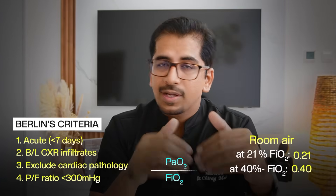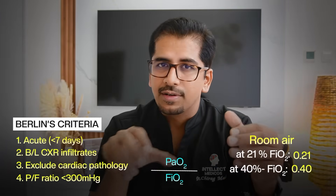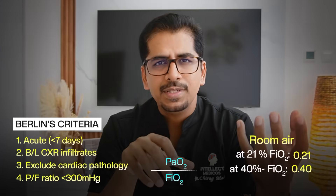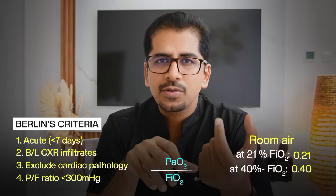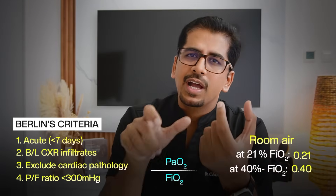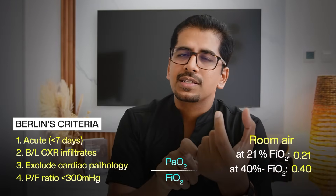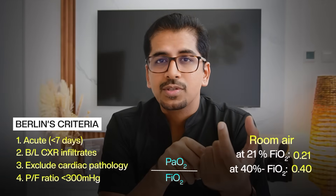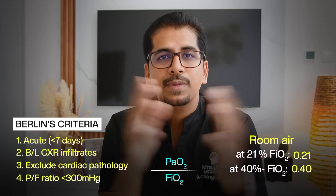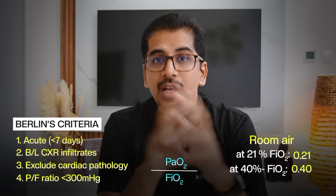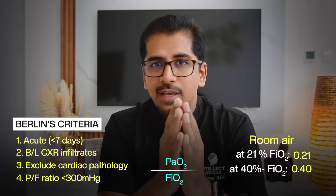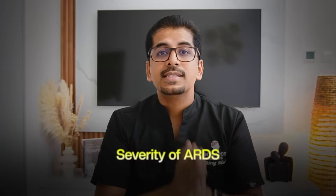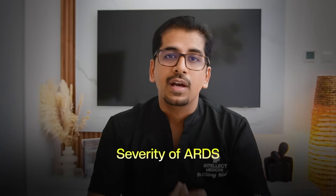Once you know that, you have to get an ABG. Take the PaO2, divide by the fraction of oxygen the patient is on, and you get the PF ratio. Based on the PF ratio, we decide the severity of ARDS.